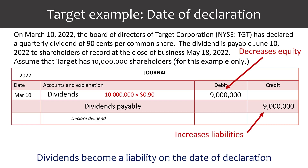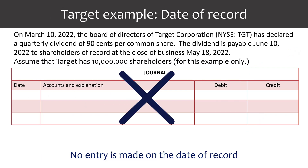The debit to dividends decreases stockholders' equity and the credit to dividends payable increases the company's liabilities. Dividends become a liability on the date of the declaration and not until that date. On the date of record, there is no entry made. The date of record simply states that the stockholders who own the stock as of this date will be receiving the dividend when it is paid.